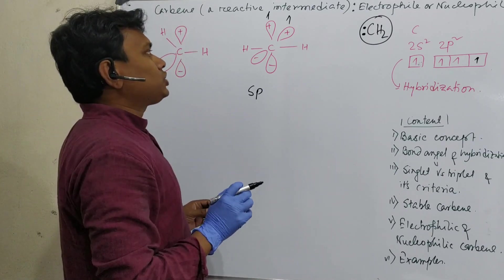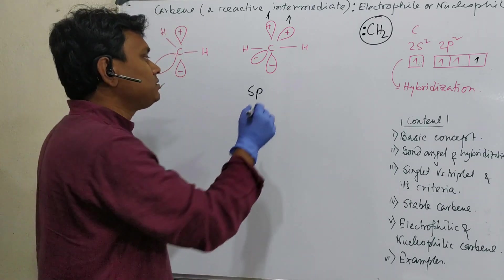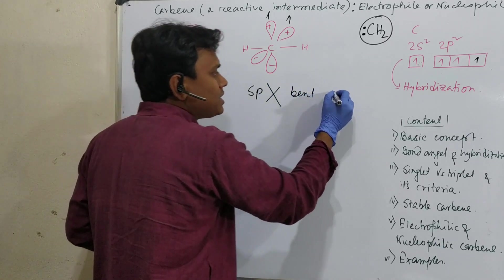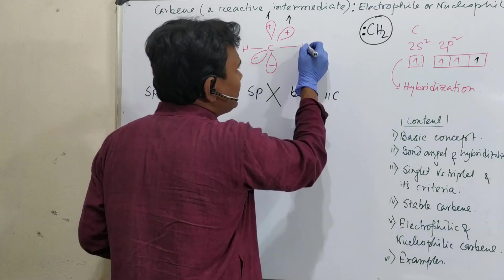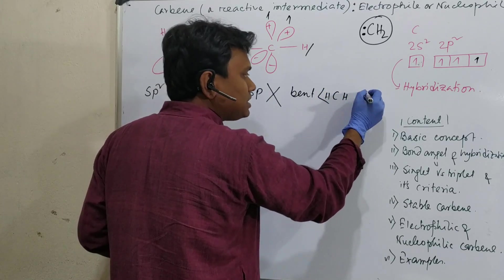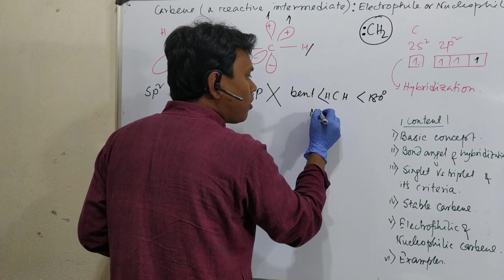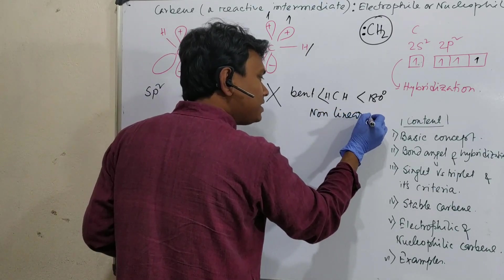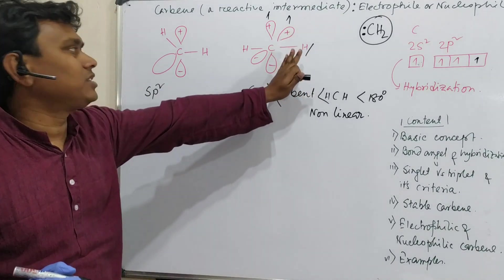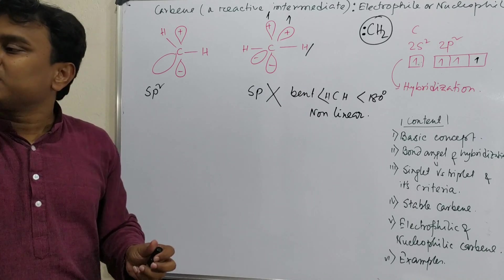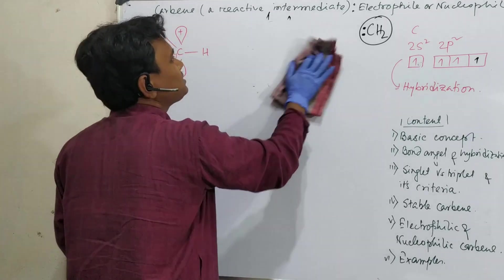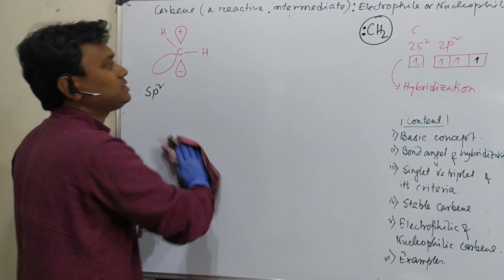If it is sp then it must be linear and the two electrons should be in this 2p orbital. But actually from experimental observation it says that this is not linear, actually bent. This CH angle is less than 180 degree and it is non-linear. Generally carbene is not like that. The only option remains that it is sp2 hybridized.